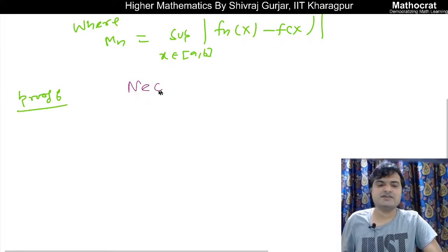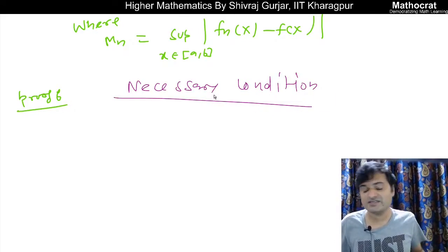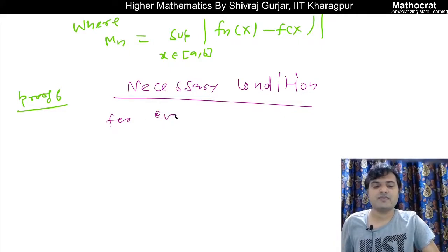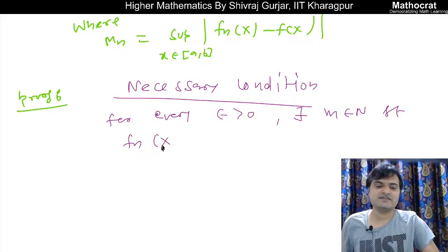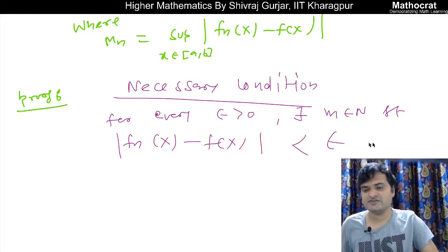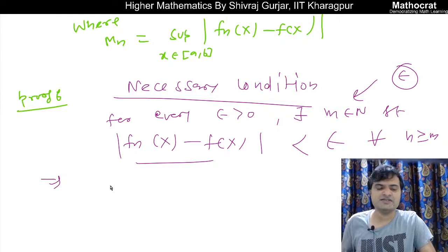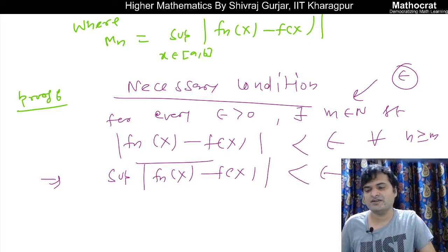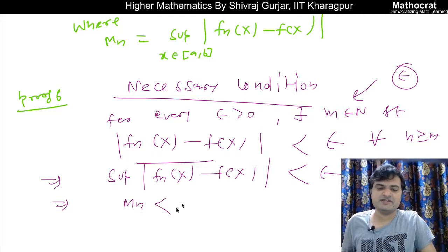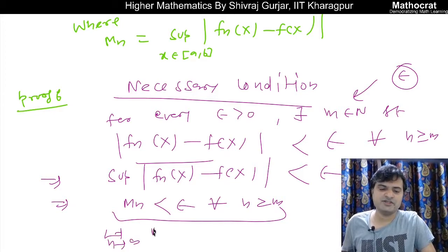For the necessary condition, it is given that the sequence is uniformly convergent. For every epsilon greater than 0, there exists m belonging to the natural numbers such that |fn(x) - f(x)| is less than epsilon for each n greater than or equal to m, and this m is a function of epsilon only. This implies that the supremum of |fn(x) - f(x)| is also less than epsilon for each n greater than or equal to m, which gives us limit n tends to infinity of MN equals 0.